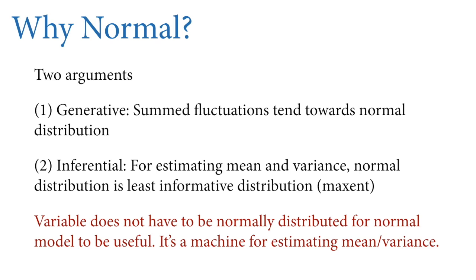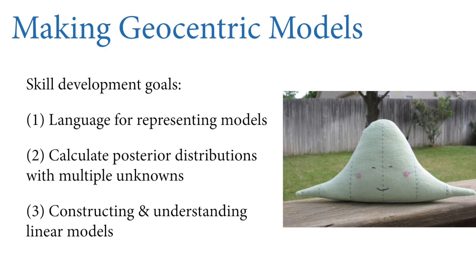I want to do three things in the remainder of this lecture. First, learn a language for representing models—a standardized statistical notational language for both generative and statistical models. Second, I'll teach you how to calculate posterior distributions when there's more than one unknown parameter—last week there was only one unknown, the proportion of water; now there will be multiple unknowns as in linear regression. Third, I'll show you procedurally how to construct and understand linear models and produce posterior predictions from them.